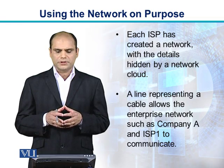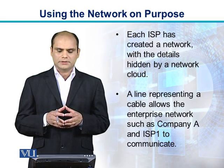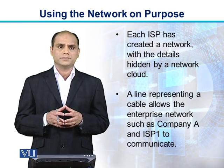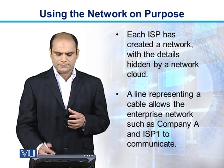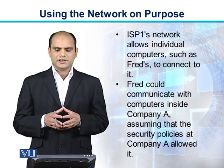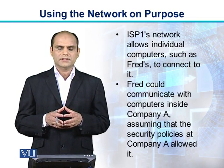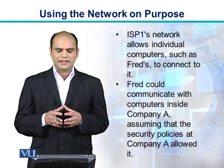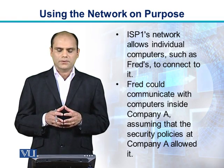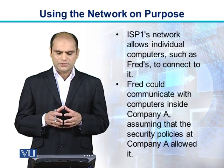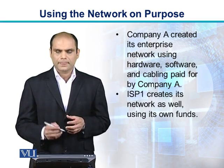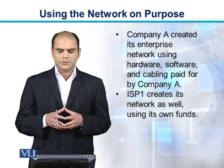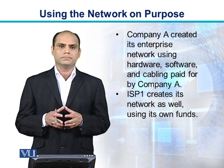Each ISP has created a network with the details hidden by a network cloud. A line representing a cable allows enterprise networks such as Company A and ISP-1 to communicate. ISP-1's network allows individual computers such as Fred's to connect to it. Fred could communicate with computers inside Company A, assuming that the security policies at Company A allow him to do so.